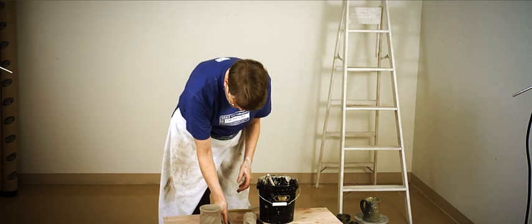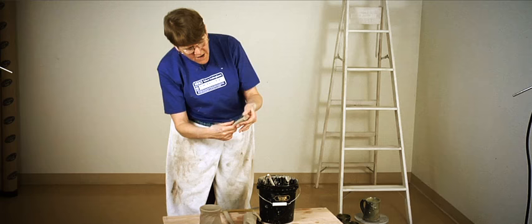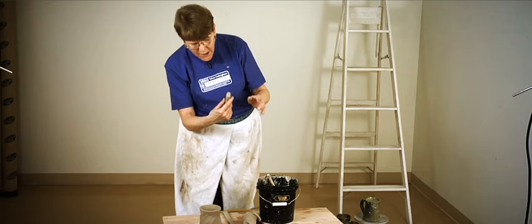This is way more handle than I need, so I'm just going to lop the end off. Then you pick it up, and you tap the end to thicken the end, because where these handles tend to have problems is right at the attachments. You want to get that a little thicker. And then I put it up against the pot.